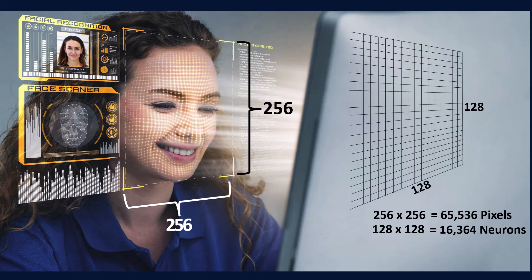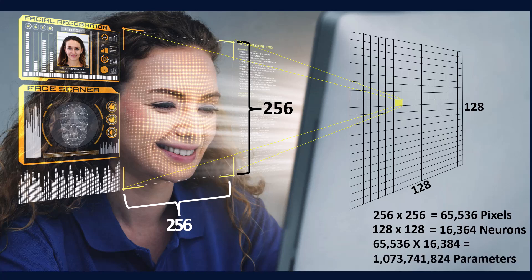If we take a grid of neurons that's 128 by 128 neurons and want to fully connect every one of those pixels to every one of those neurons, that works out to 16,384 neurons. Connecting every pixel to every neuron in a fully connected layer means 65,000 times 16,000 — we're already over a billion parameters. Engineers initially tried hooking things up like this, but it was just too much. The network wouldn't learn; it was a complete mess.